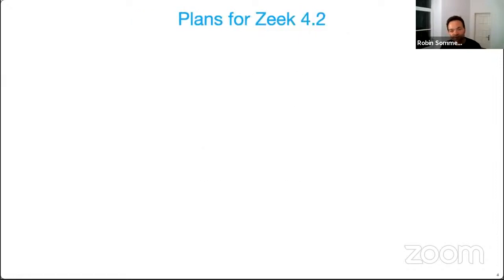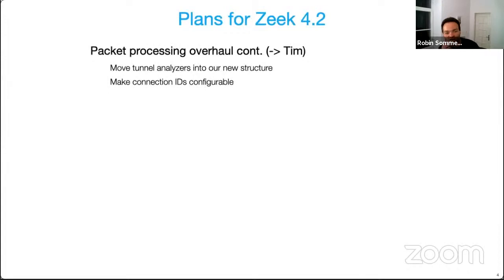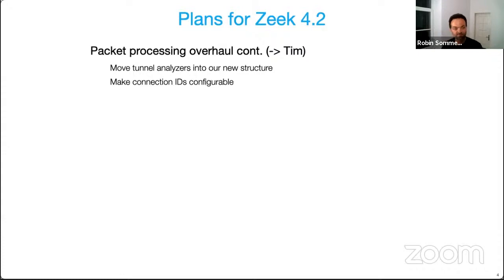So let's look at 4.2 — the version that is coming. We will continue a bunch of themes we have been working on for a while. Tim has been overhauling the complete packet processing pipeline internally over the last couple of versions. This means that Zeek is now no longer tied to the TCP/IP protocol stack, but is able to analyze protocols of any layer two and layer three format. We don't make much use of that yet, but the infrastructure is there. The final pieces involve moving tunnel analyzers into that new structure and making the notion of what constitutes a connection ID in Zeek more configurable.